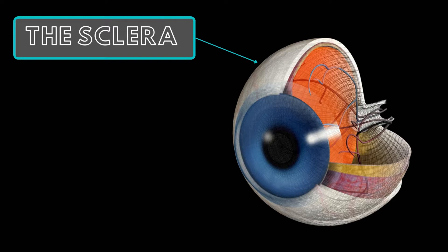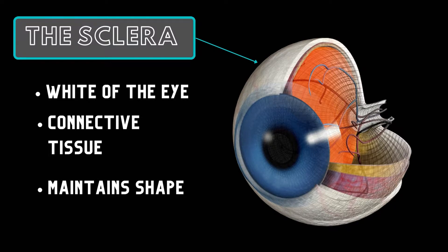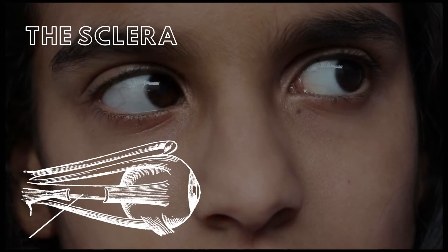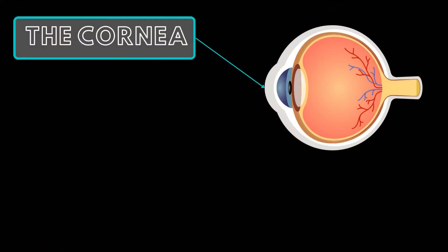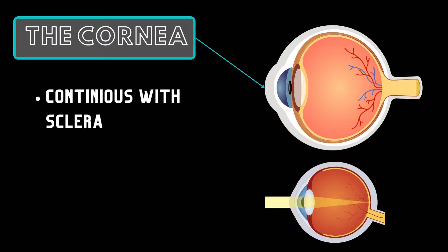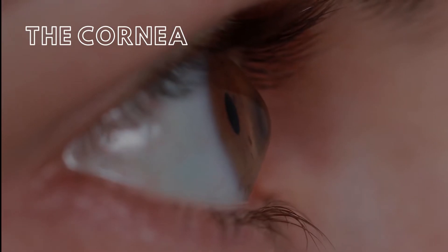The sclera, also known as the white of the eye, is an important component of the eye's structure. Composed of connective tissue, it covers the majority of the eyeball's surface and plays a large role in maintaining its shape. Additionally, the sclera is the point of attachment for the muscles of the eye, which enable movement. Anteriorly, the sclera is continuous with the cornea, which is where light enters the eye. The cornea protrudes from the sclera and is smaller in diameter.